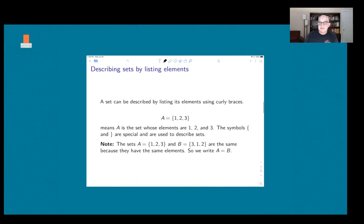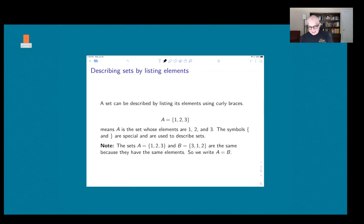One way to describe a set is to list the elements of the set, and there's a standard notation for that, which you probably know, which is that we use these curly braces, and they have a special meaning. Whatever I put between the curly braces is supposed to be viewed as a set. Here I've described a set A as being the set which consists of the elements 1, 2, and 3. Because a set only depends on what its elements are, the order of the elements doesn't matter. I could define another set B, which is 3, 1, 2, and that would be the same set as A. The fact that I've listed them in a different order doesn't matter.